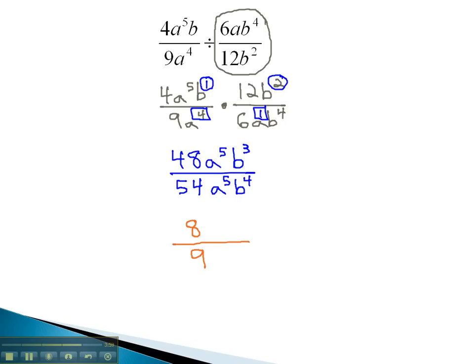Notice, the a to the 5ths are identical in the numerator and denominator, and can divide out completely. This is why a to the 0 is 1, because they divide out completely. 5 minus 5 is a to the 0, or 1.